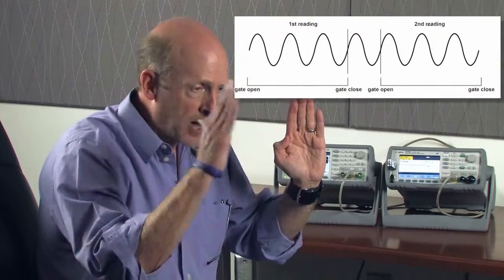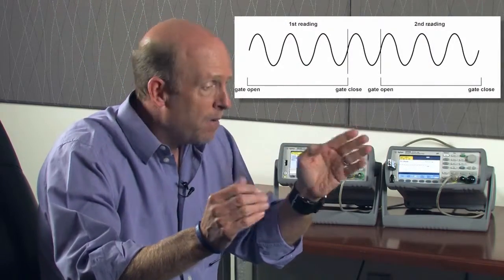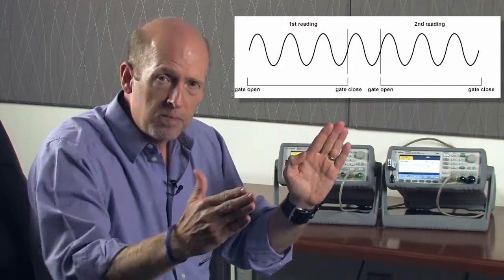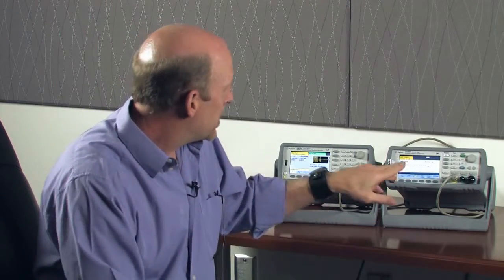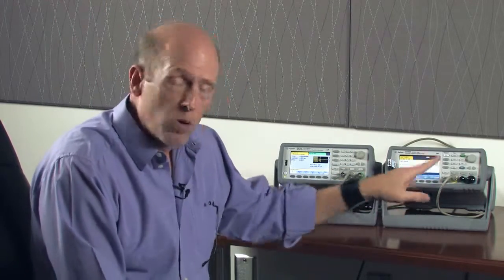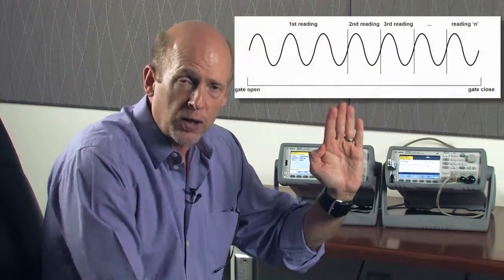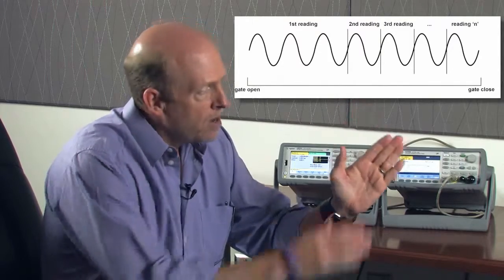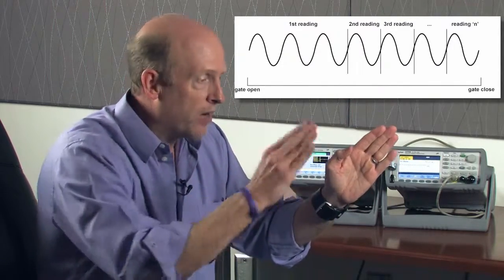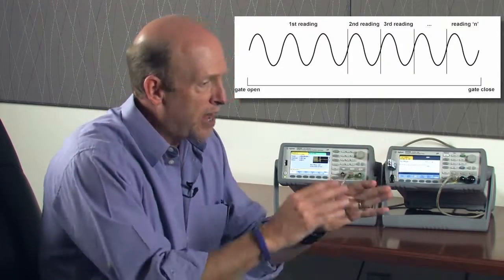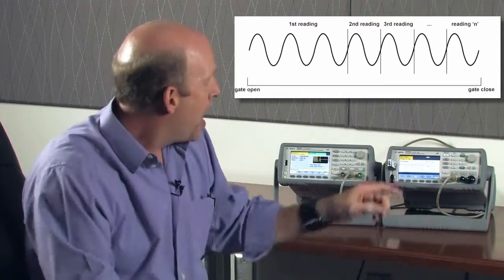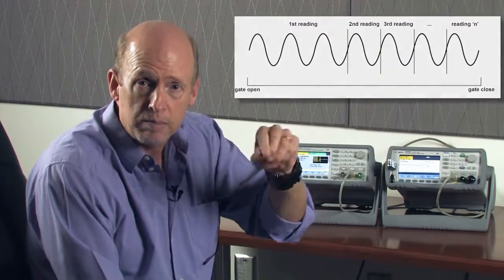In auto mode, the trigger comes in, the gate opens, I begin the measurement, the gate closes, I complete the measurement. The next trigger comes in, I open the gate, make the measurement, the gate closes, and so on. In continuous mode — the second mode I'll demonstrate — there is one gate open at the beginning. Once the trigger is received, the gate opens for the first reading and remains open for each subsequent reading, then closes once all readings are taken. This eliminates the gap between consecutive readings and allows us to measure consecutive input cycles.